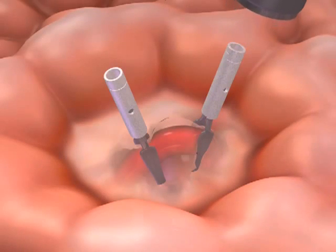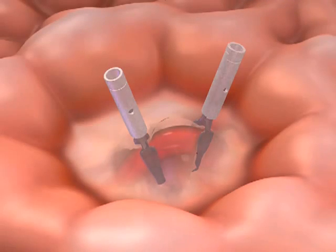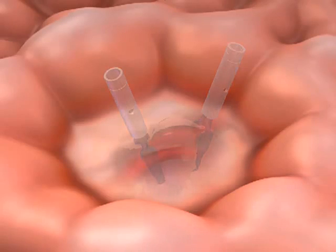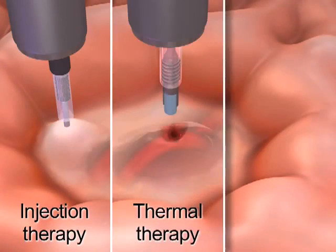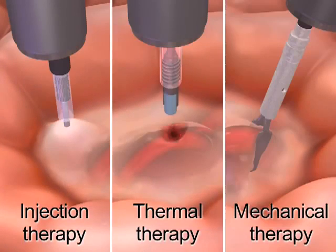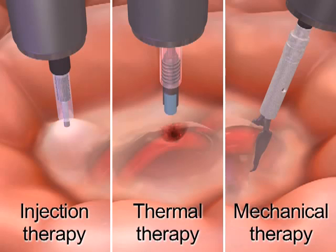As a rule, when optimally placed, the clips should remain in situ for at least 7 to 10 days before sloughing off. All methods of endoscopic hemostasis have been shown to be effective, so it is recommended that endoscopists use the hemostasis technique that they are most comfortable performing and that is best fit to the appearance and location of the lesion.